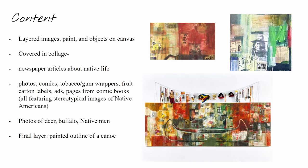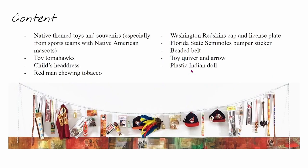Zoomed in here on the top right, you can see different layers of paint and newspaper, with this one featuring a Native American man. And here on the left, you can see prints of deer and buffalo. Specifically at the top portion of the work hangs objects on a clothesline. These include Native-themed toys and souvenirs, especially from sports teams with Native American mascots. There are also toy tomahawks, a child's headdress, Red Man chewing tobacco, a Washington Redskins cap and license plate, and a Florida State Seminoles bumper sticker. There's also a beaded belt, a toy quiver, an arrow, and a plastic Indian doll.